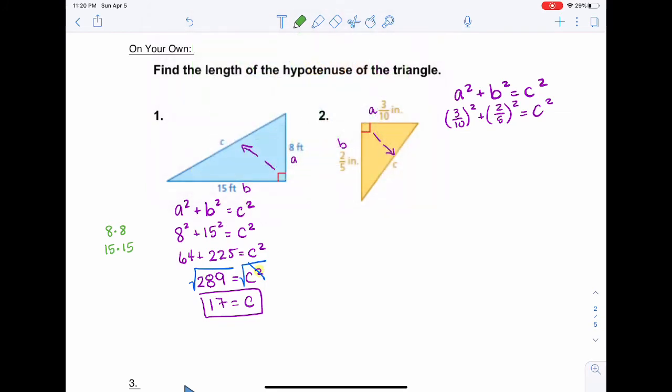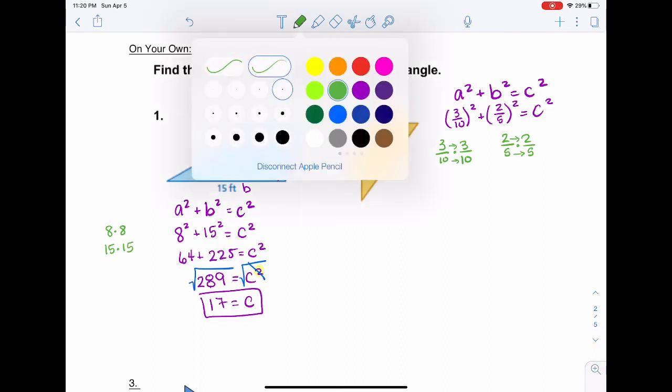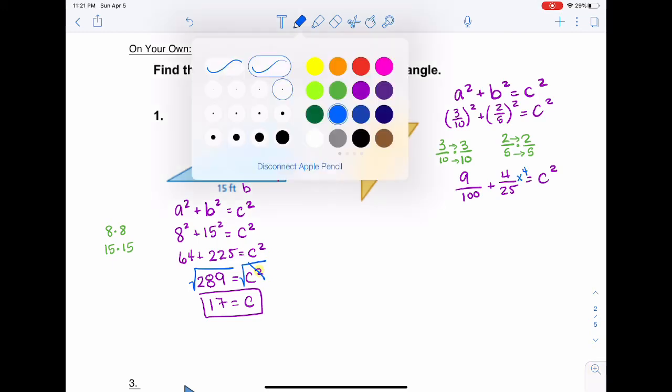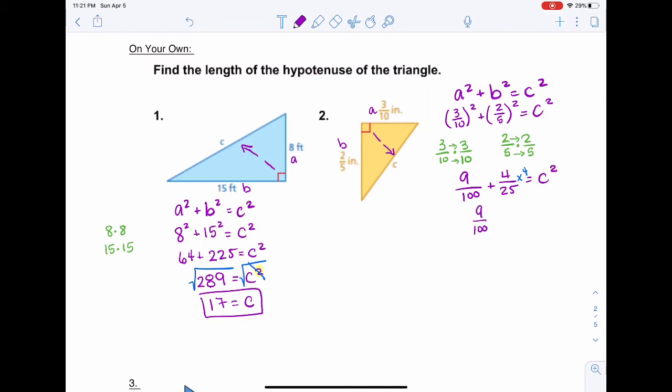Now, con fracción, acuérdese, cuando usted está multiplicando, you're just multiplying 3 over 10 times 3 over 10, 2 over 5 times 2 over 5. And you just multiply straight across. Now, la cosa importante aquí es acordarse. Usted no puede sumar esto si los denominadores no son igual. And so here, they're not the same. Tengo que convertir uno. Este lo voy a multiplicar por 4.